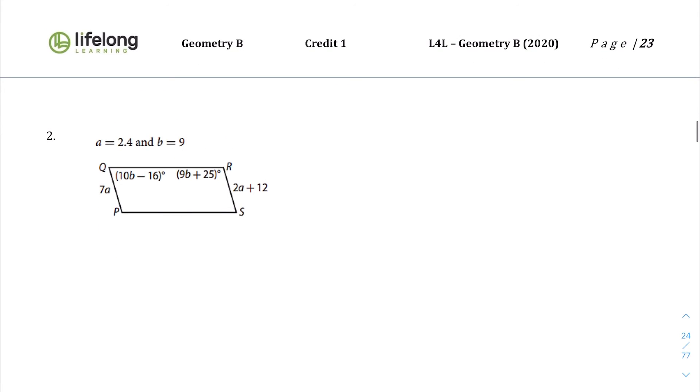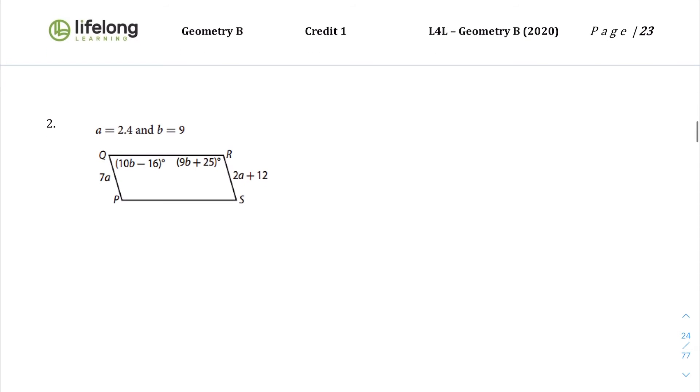All right, here's question 2, where's your turn section. A equals 2.4, b equals 9. So I guess they just want you to justify this. QP, 7a, and so instead of a we're putting 2.4.